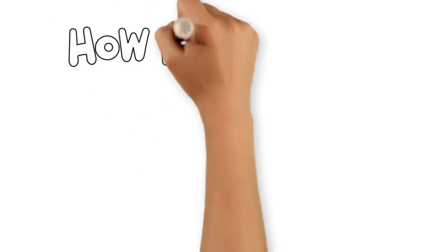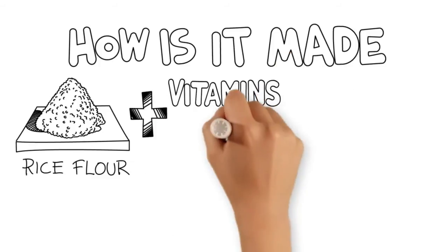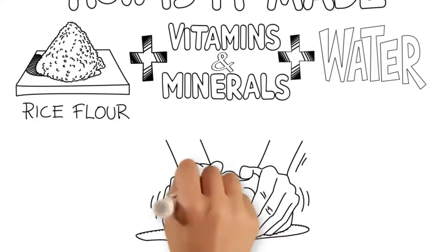This is how vitamins and minerals are added to rice. We take some rice flour, mix in vitamins and minerals and some water and make a dough.